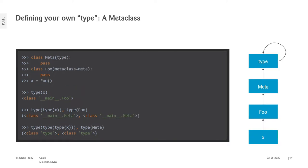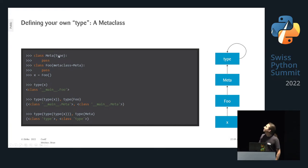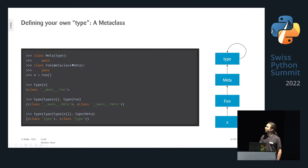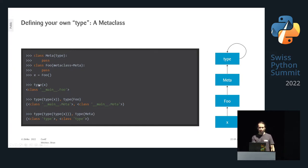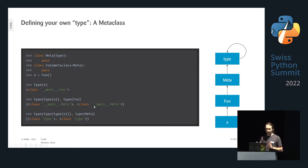We can define a metaclass called Meta that inherits from 'type', making it a metaclass. Then we define class Foo with metaclass=Meta. When we create an instance, the type of x is Foo (not surprising), but the type of Foo is now Meta instead of 'type', and the type of Meta is then 'type'. So we have: x is of type Foo, Foo is of type Meta, Meta is of type type.